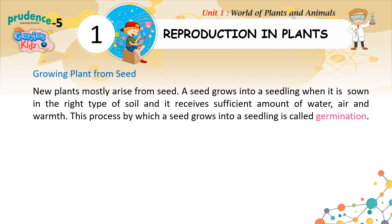New plants mostly arise from seeds. A seed grows into a seedling when it is sown in the right type of soil and receives a sufficient amount of water, air, and warmth. This process by which a seed grows into a seedling is called germination.